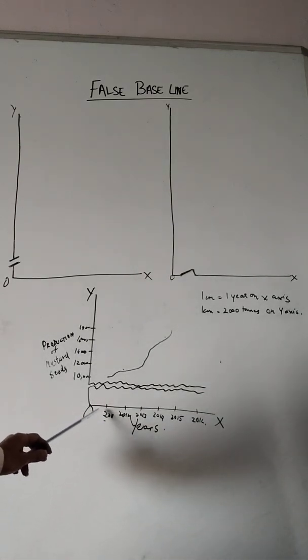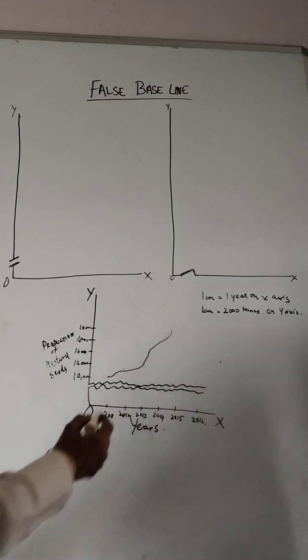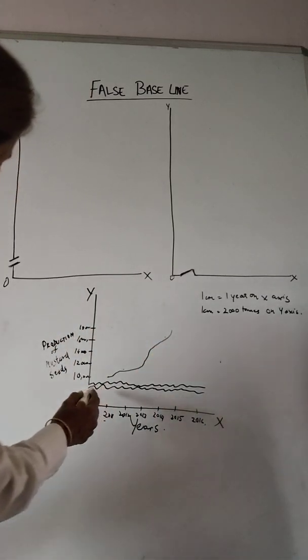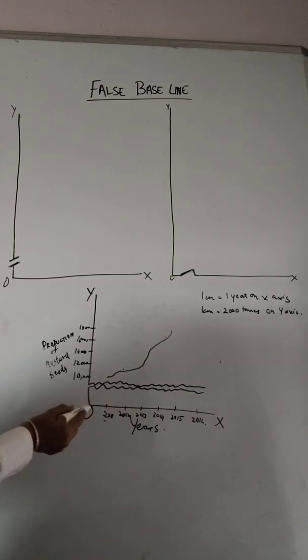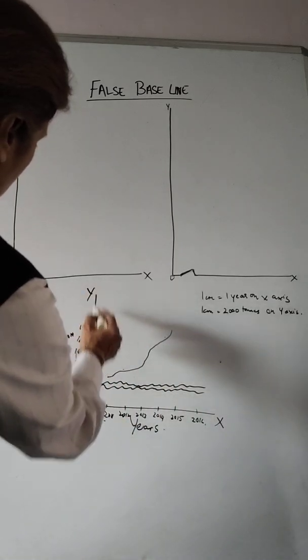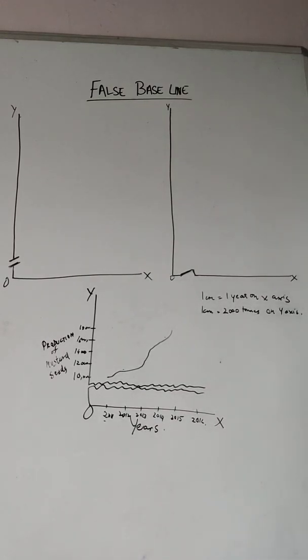But just imagine zero here and the first value itself starts from 10,000. So this is how the curve will be depicted. And in order to show that the difference between zero and 10,000 is immense, we have broken the y-axis. So this is known as a false baseline.